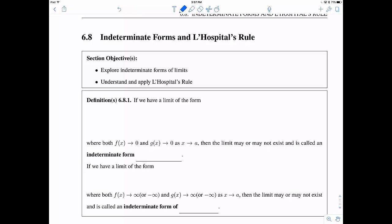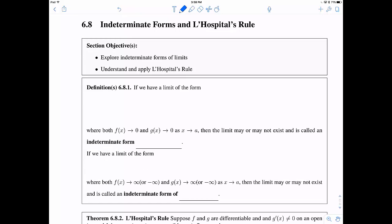The first thing we have is a definition here, and we need a limit of the form, and this is going to be your standard limit, the limit as x approaches a of f(x) over g(x). And this is where f(x) and g(x) both approach 0 as x approaches a. So then the limit may or may not exist, and it's called an indeterminate form of type 0 over 0.